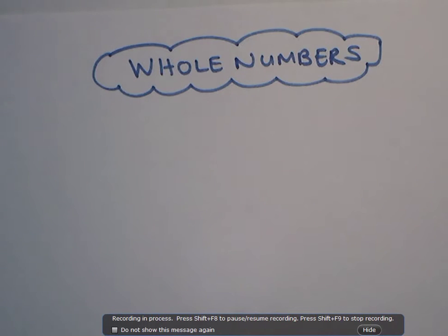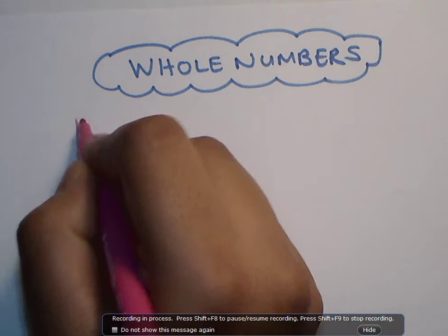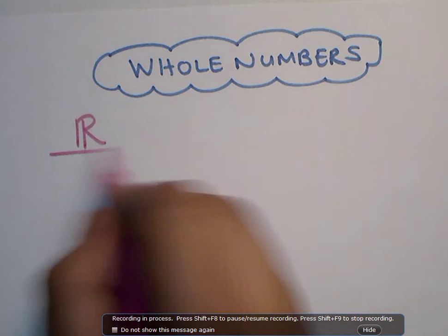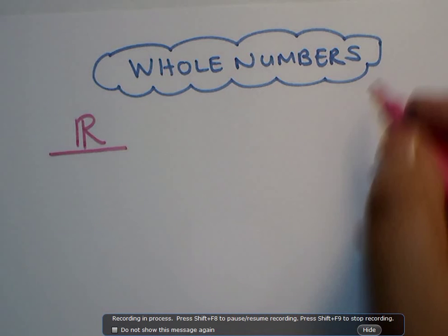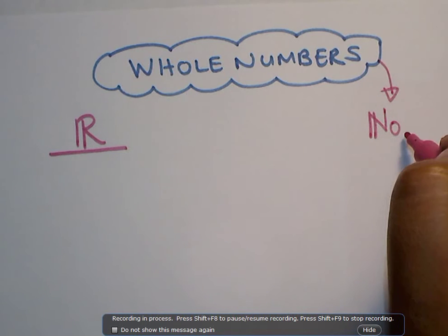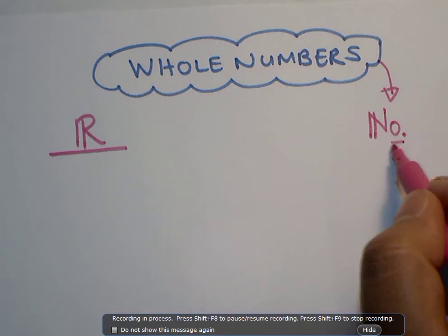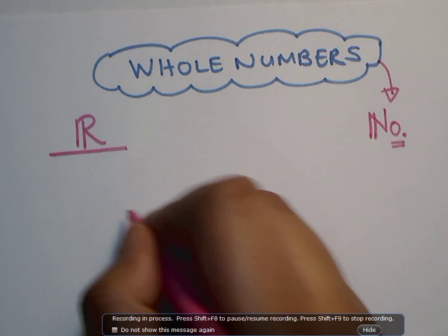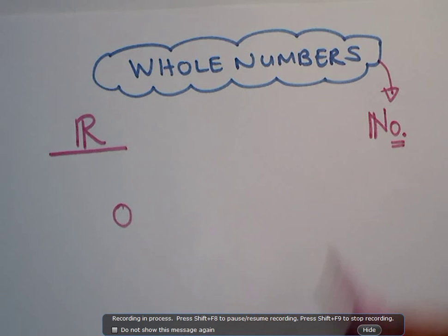Whole numbers are part of the real number system. Real number systems are numbers that exist in the real world. The symbol for whole numbers is an N or a small O. That is to make sure that you know it starts from 0, and they are whole numbers as in they do not have any decimals or fractions.